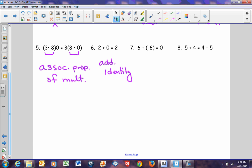If we look at number 7, 6 plus negative 6 equals 0. A number and its opposite equals 0. That has got to be the inverse of addition because we're adding. So this is the inverse property of addition.